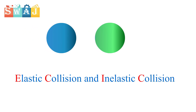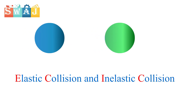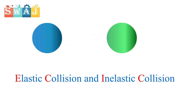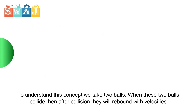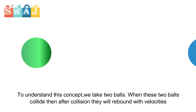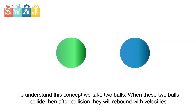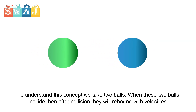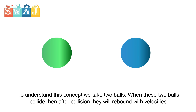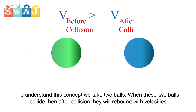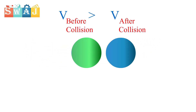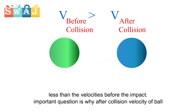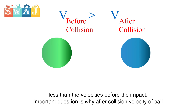Elastic and inelastic collision. To understand this concept we take two balls. When these two balls collide, after the collision they will rebound with velocities less than the velocities before the impact.